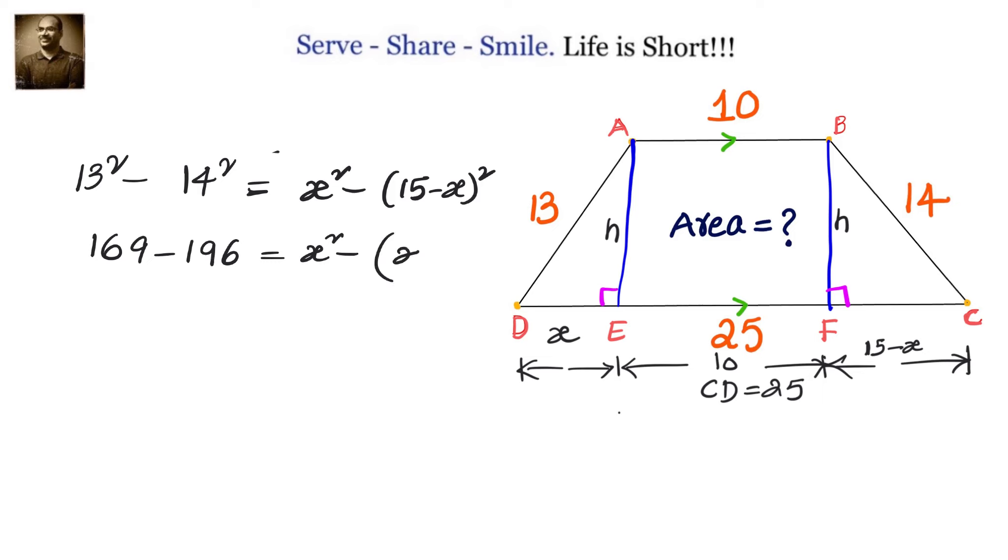13² is 169, 14² is 196, and on the right side we have x² - (x² - 30x + 225). Let us simplify: -27 = x² - x² + 30x - 225. We can cancel x² terms. We will get 30x = 198, so x = 6.6.